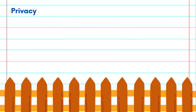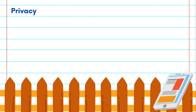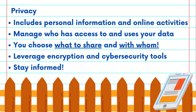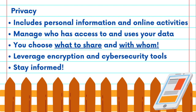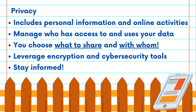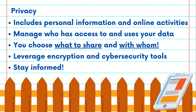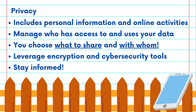First, privacy. Privacy is like a digital fence that protects your personal space. Think of your smartphone as a virtual residence — your possessions within the home are your data, including your personal information and online activities. By maintaining your privacy, you can manage who has access to and uses your data. Websites, applications, and social media platforms may want to access your data, but the choice of what to share and with whom is entirely up to you.